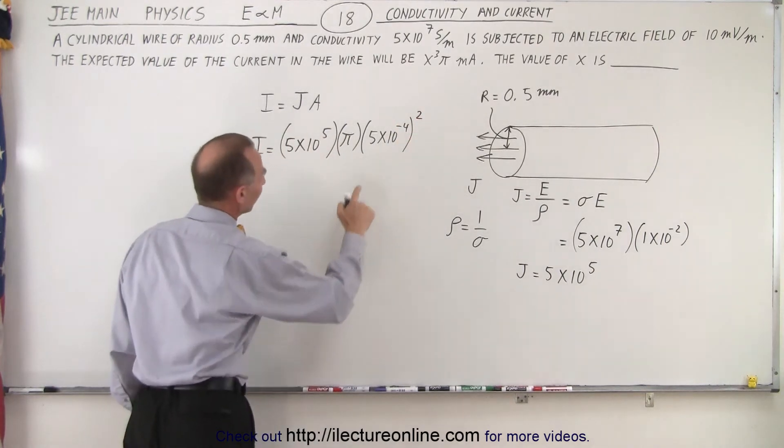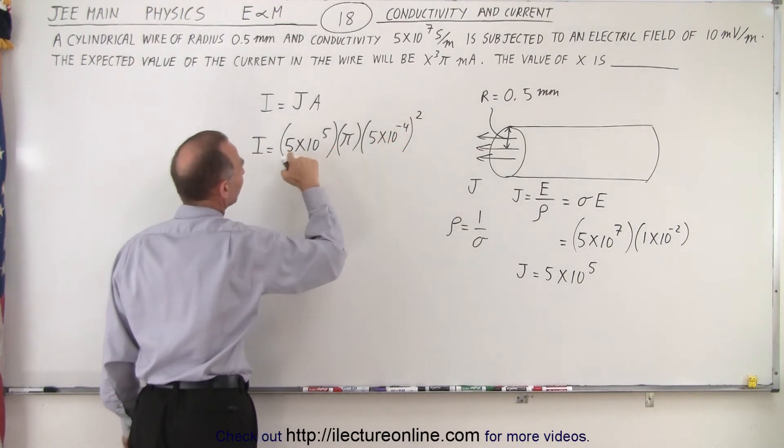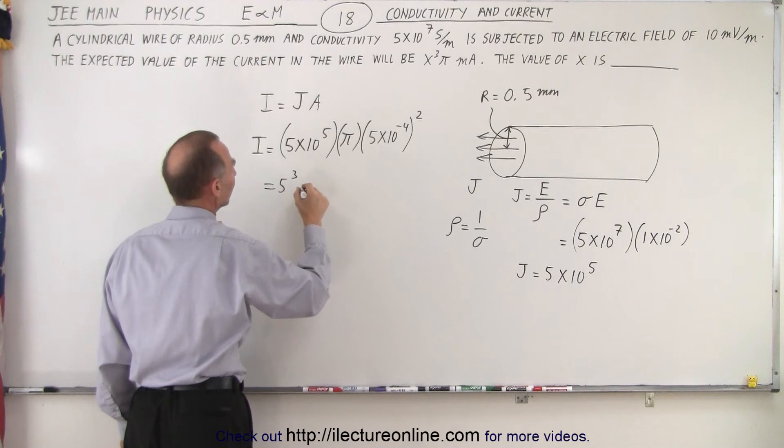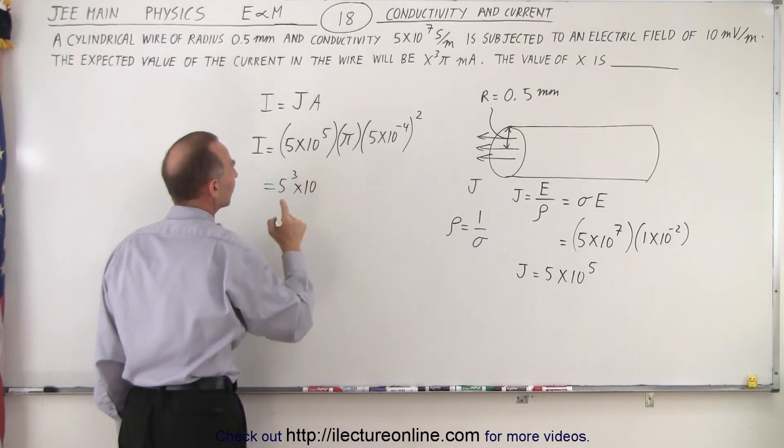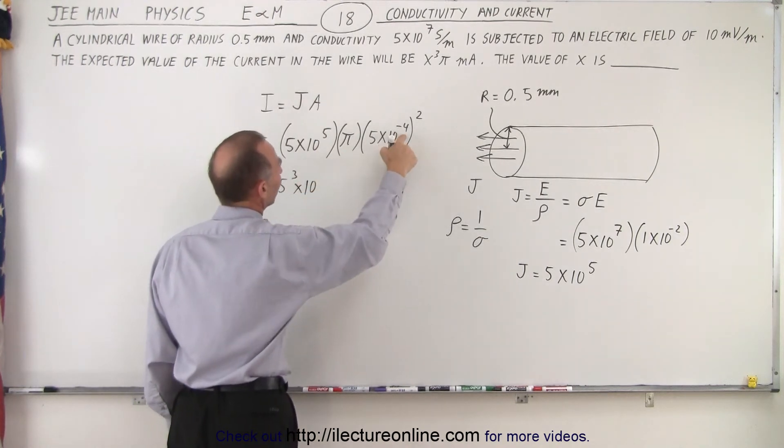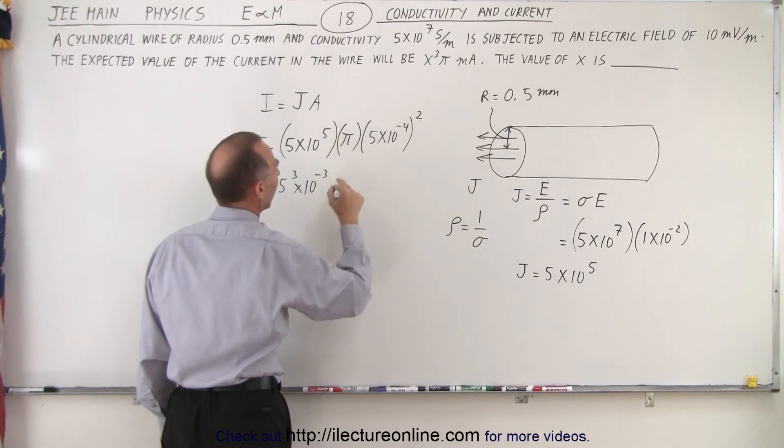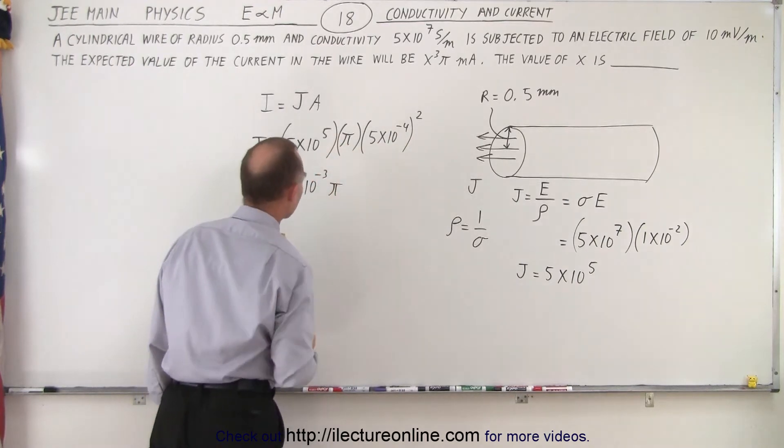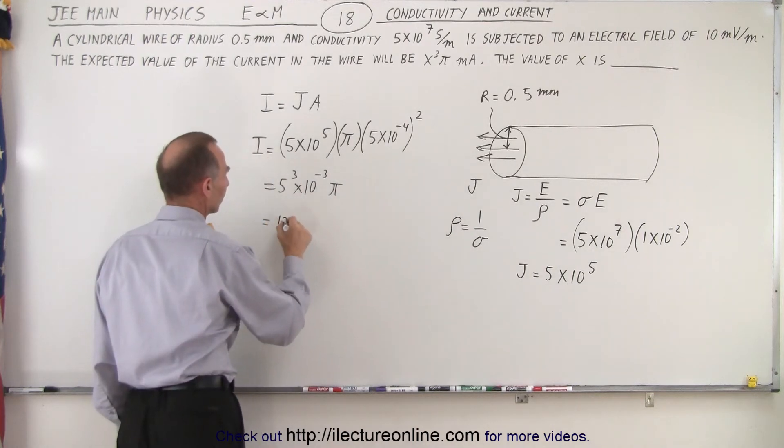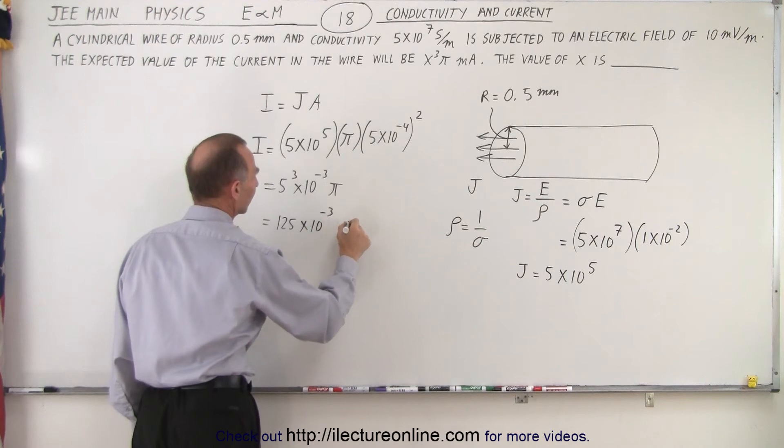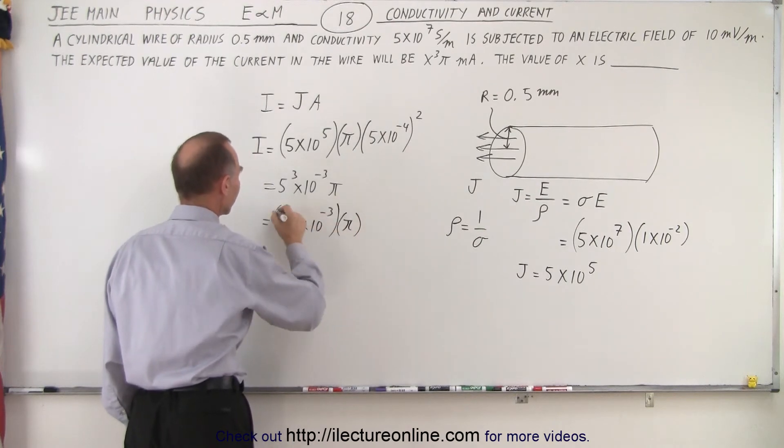so we end up with 5 times 10 to the minus 4, and we want to square that. So now we have 5 squared times 5, which is 5 cubed. So 5 cubed times 10 to the fifth, this is minus 8. Minus 8 and the fifth, that would be minus 3, and times pi. So this would be equal to 125 times 10 to the minus 3 times pi.